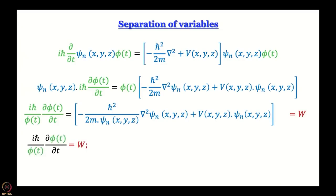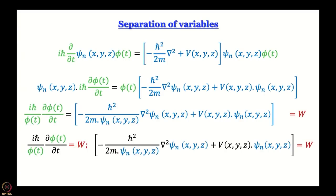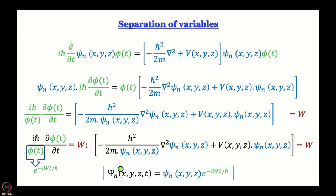The time-dependent equation gives us iℏ/φ(t) · dφ(t)/dt = W. This is easy to solve, and the solution is e^(−iWt/ℏ). We do not use a linear combination here because we have the benefit of hindsight. Plugging back in, the time-and-space-dependent wave function is expressed as ψₙ(x,y,z) multiplied by e^(−iWt/ℏ).